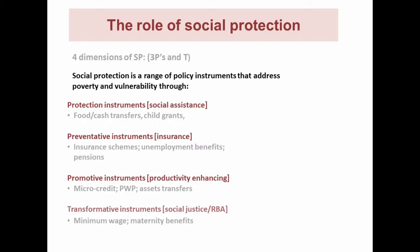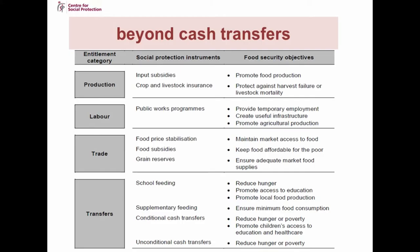Overall, there is a movement from short-term interventions to addressing longer-term underlying issues and constraints. Beyond cash transfers — we hear so much about how important they are, and they are, but they have dominated the agenda. There are a number of other instruments used in social protection to address food security objectives, going across a range — from productive instruments like input subsidies and livestock insurance, to labour-related and public works programmes, to food subsidies, grain reserves, and food price stabilisation.